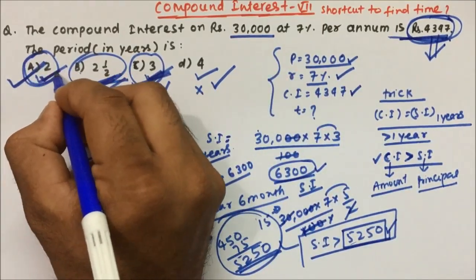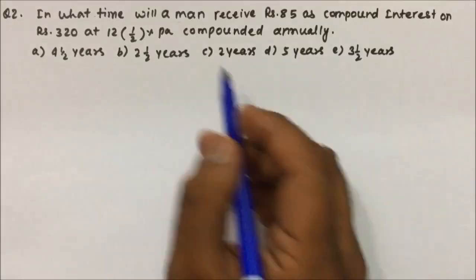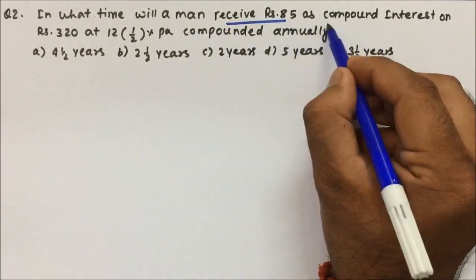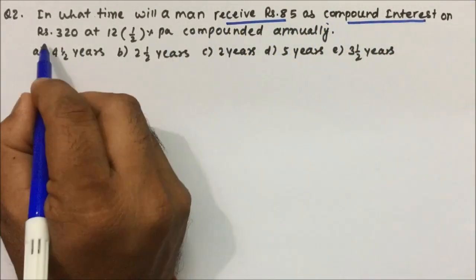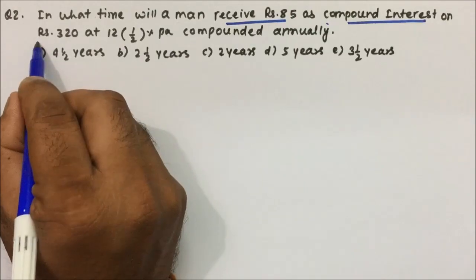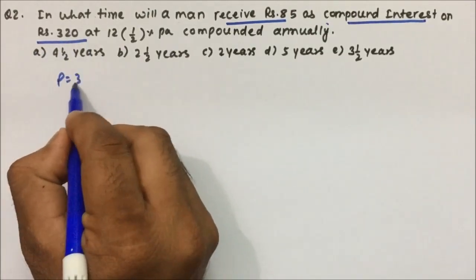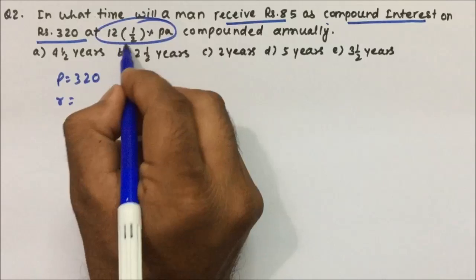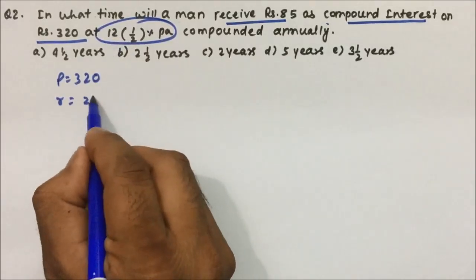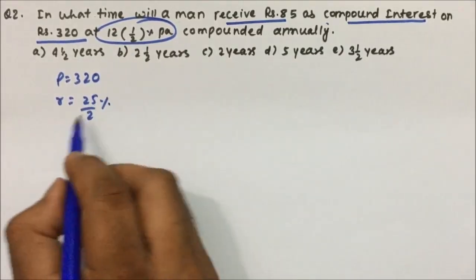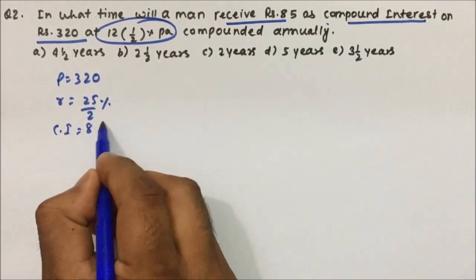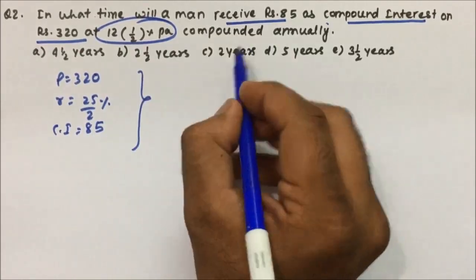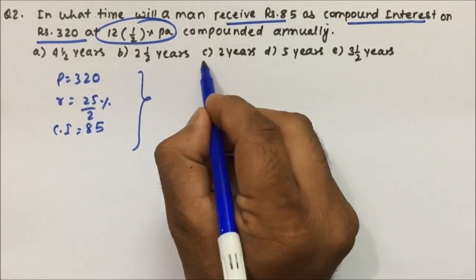Question 2: In what time will a man receive rupees 85 as compound interest, with principal 320 rupees and rate 25/2 percent? Compound interest is 85. We will do the same thing. The least option value is 2 years, so we calculate for 2 years first.